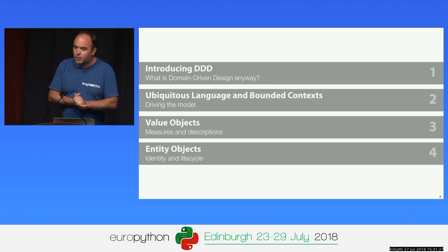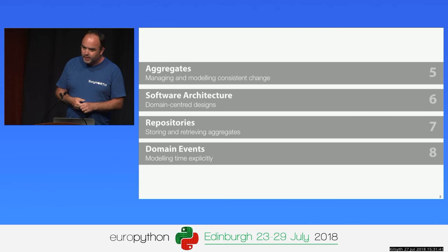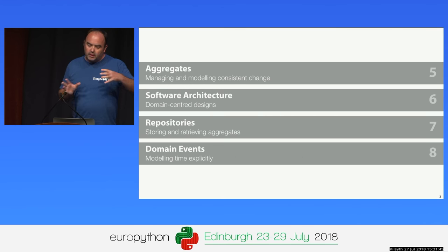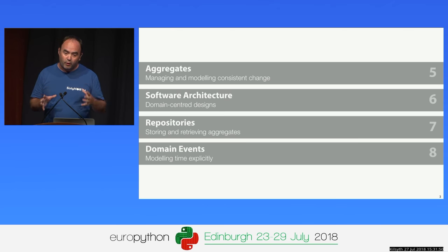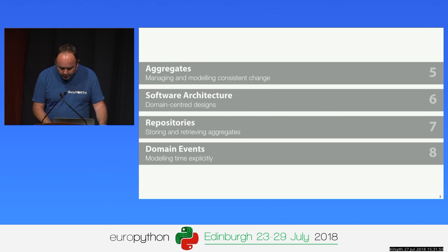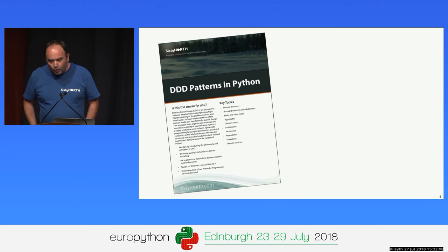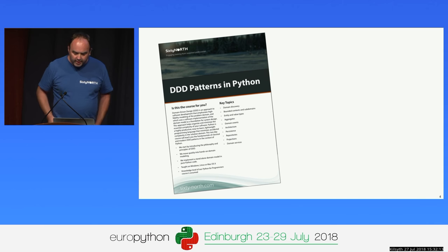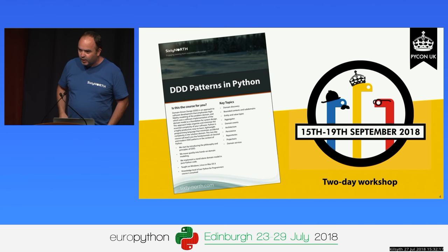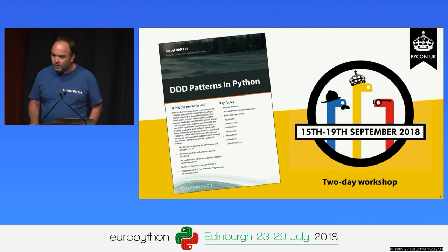Then we're going to talk about the smallest, simplest patterns in domain-driven design: value objects and entity objects. Then we're going to move on to aggregates, which is a topic that some people find very confusing at first. Then I'm going to talk about software architecture and how the architecture of an overall application can be centered on a domain model. Nearly all the content you're going to see today is extracted from a training course that my company 60 North delivers. I'm making an exception to promote PyCon UK in Cardiff later this year, where we are giving this course for free for two days.